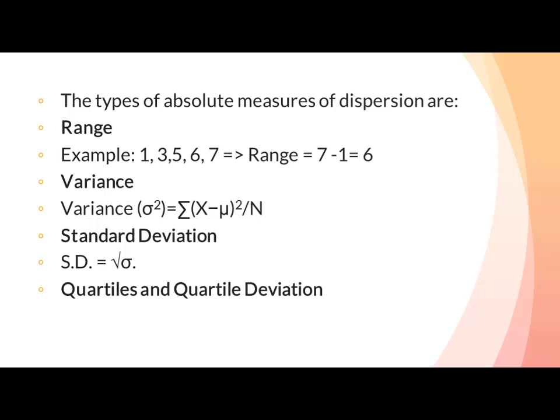Quartile deviation: the quartiles are values that divide a list of numbers into quarters. The quartile deviation is half of the distance between the third and the first quartile. Mean deviation: the average of numbers is known as the mean, and the arithmetic mean of the absolute deviation of observations from a measure of central tendency is known as the mean deviation, also called mean absolute deviation.